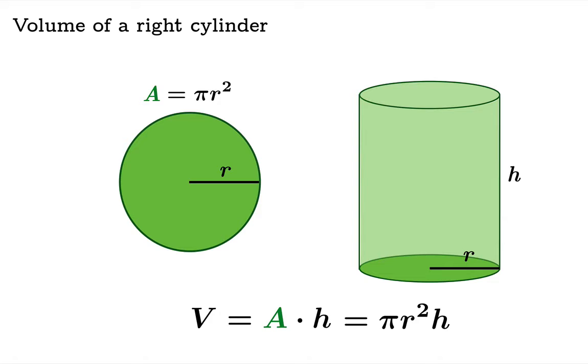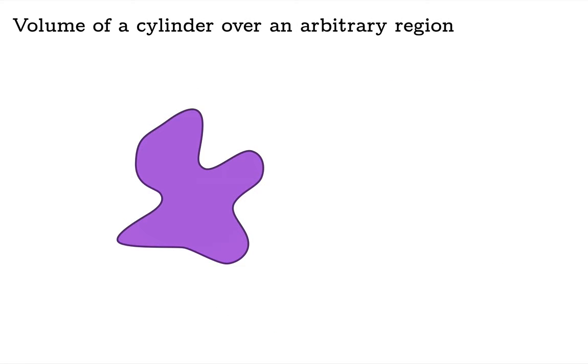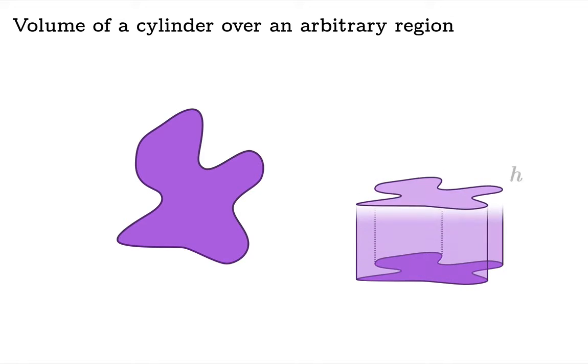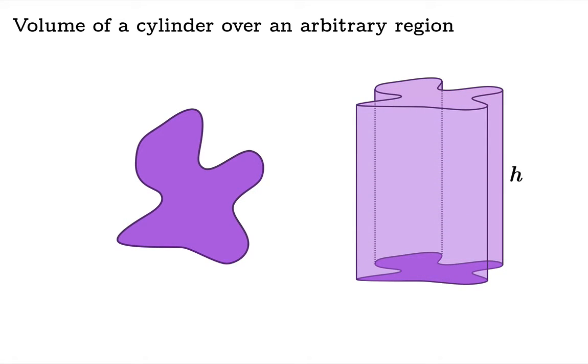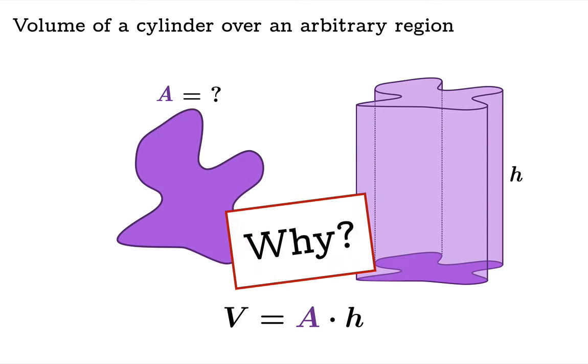But why would this still work? We're not working with boxes anymore, we're working with a circular base. As a matter of fact, does it work with any old object? So if you took some blob and swept it through height h to form a cylinder over that region, and you didn't know what the area was, should the volume still be a times h? Well, it is, but why?